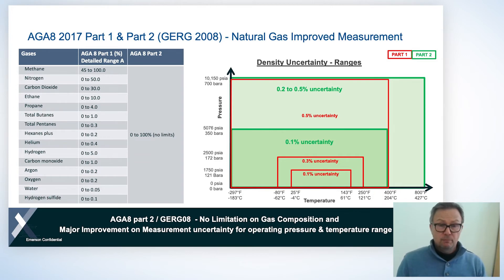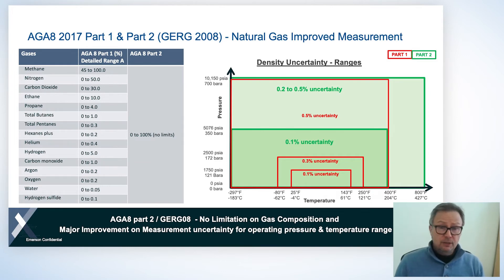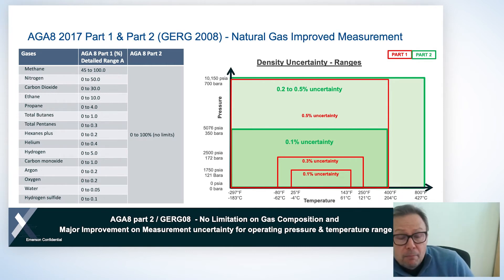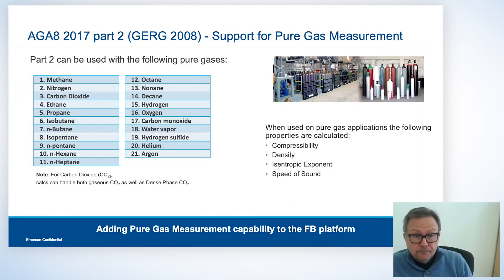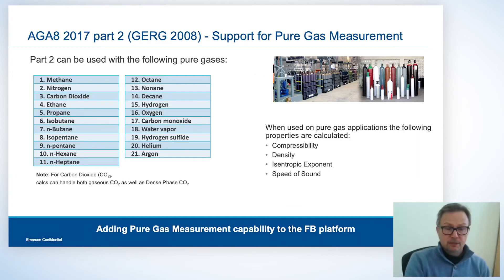So very good measurement uncertainty over a significantly wider pressure and temperature range and a significantly wider gas composition range. And remember, if we go outside of that operating envelope with AJ8 part two, we still get something between 0.2 and 0.5% measurement uncertainty.